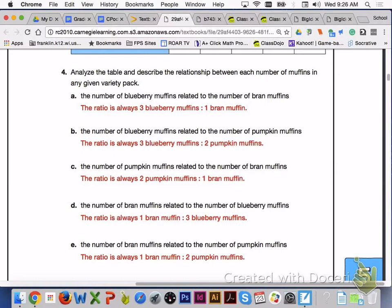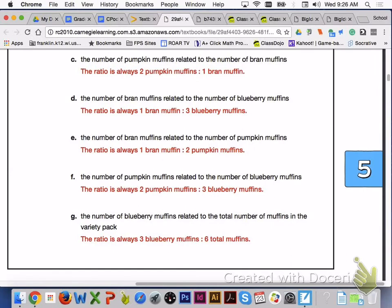E, 1 bran to 2 pumpkin. F, 2 pumpkin to 3 blueberry. E, 1 bran to 3 blueberry to 6 total.